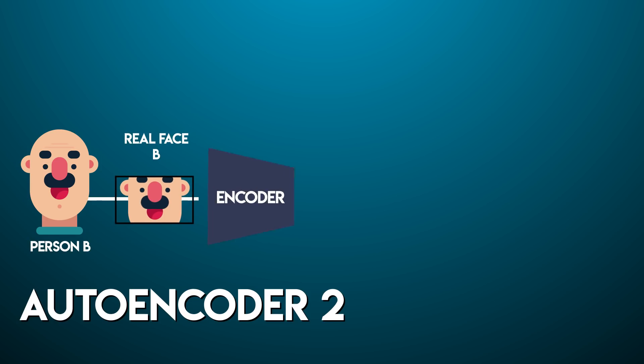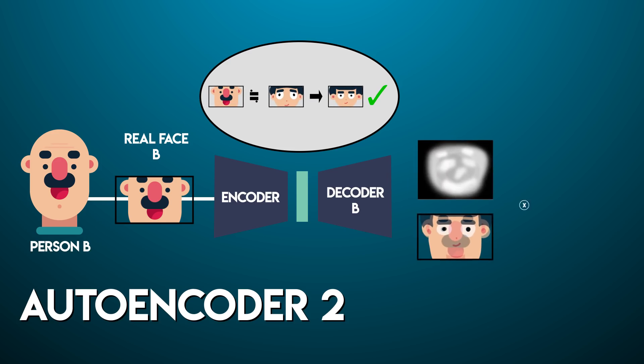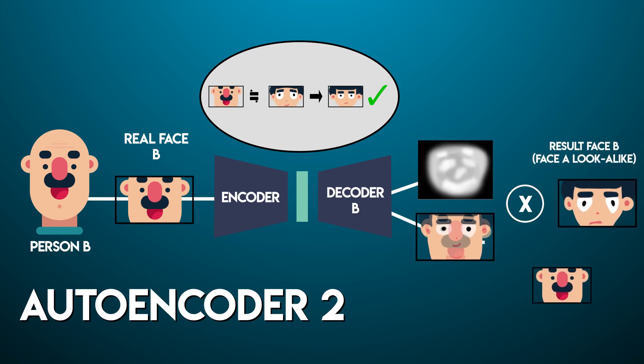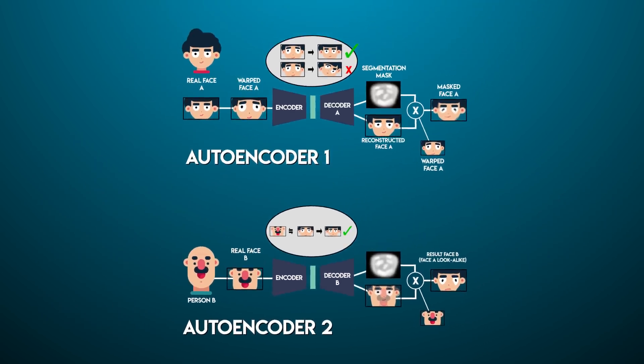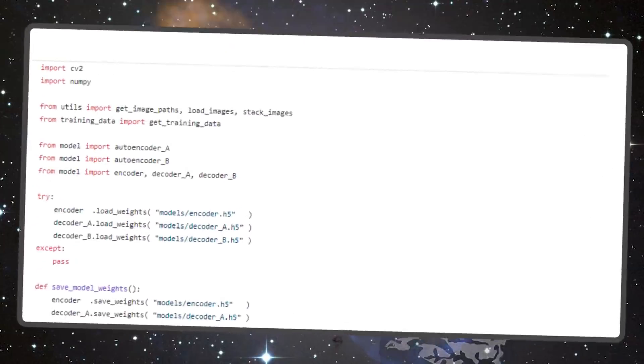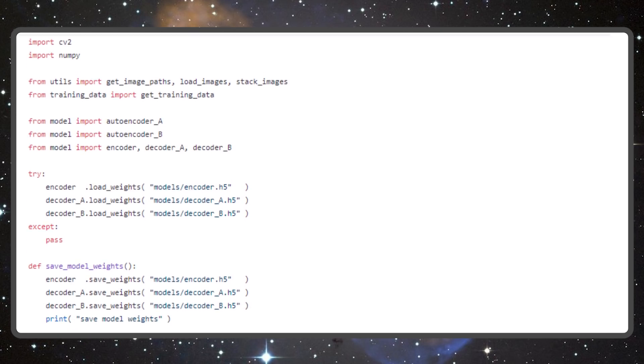The first network is only trained on image A and the second network is only trained on image B. The encoder learns how to convert an image into a face vector. Decoder A learns how to convert a base vector to image A and decoder B learns how to convert a base vector to image B. So during training we're feeding both images to the same encoder but using two different decoders for each.